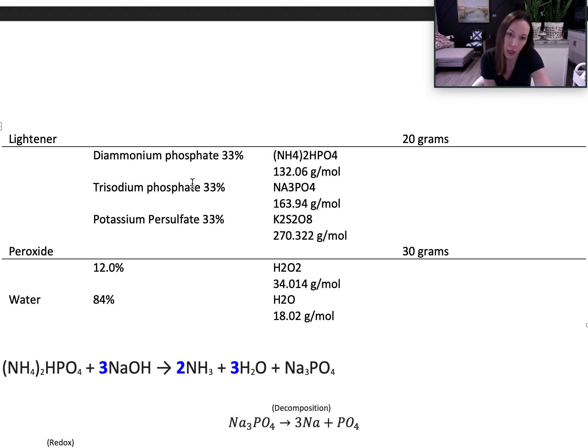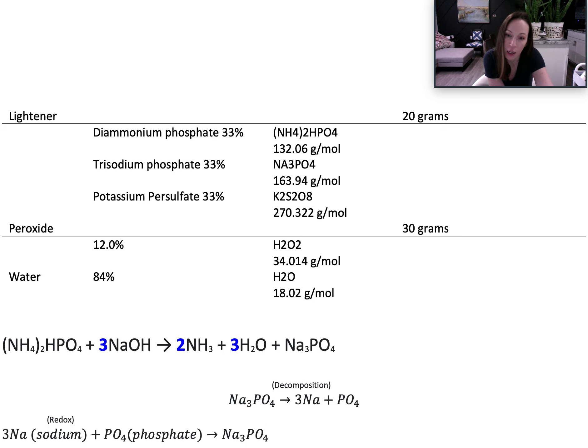what makes up Leitner is diammonium phosphate, trisodium phosphate, and potassium persulfate. What makes up peroxide is mostly water at 84% and peroxide at 12%.